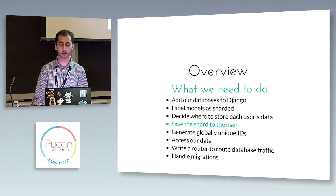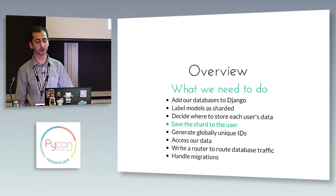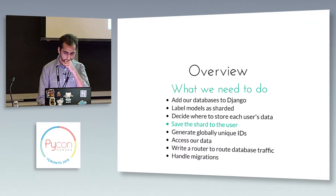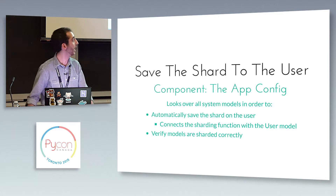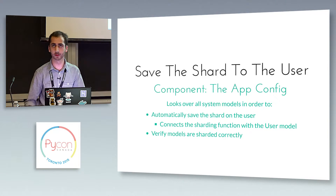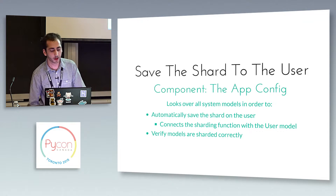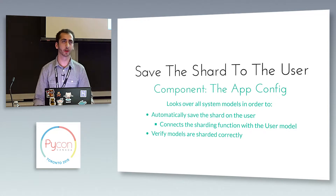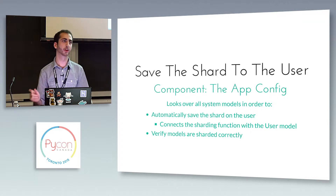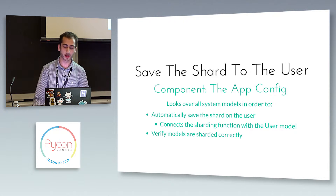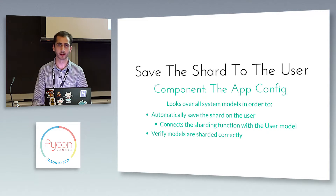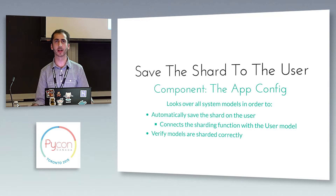The next thing is to actually save the shard to the user — we added that field, but we never actually saved it. The way we do that is through an app config. Django in more recent versions added app configs that you can load at runtime. We use Django signals to say: every time we go to create a user, we use that pick_shard function to decide what shard the user should go on, and then save it to the user model. We also do additional verification that things are set up correctly on an app-wide level — we want things to explode when you try to start the app, not while you're running it.